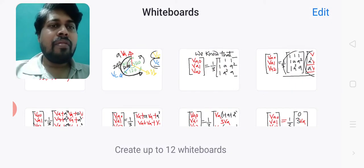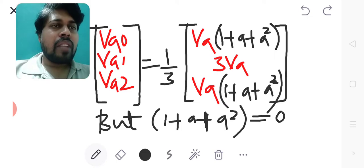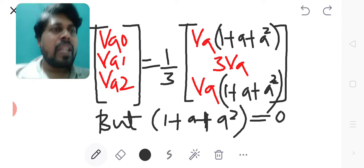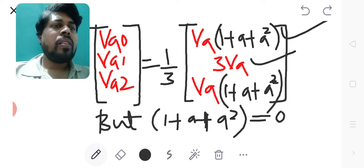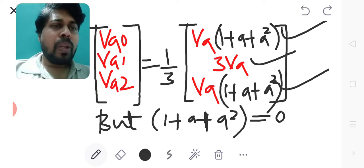By taking VA common outside in the first row, it becomes VA into bracket 1 plus A plus A square. The second row will become VA plus VA plus VA as 3 VA. The third row, if I take VA common outside, it will become VA into bracket 1 plus A plus A square. Where we know that 1 plus A plus A square equals 0.